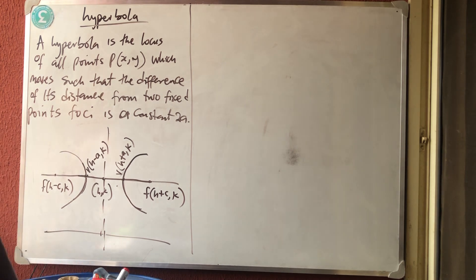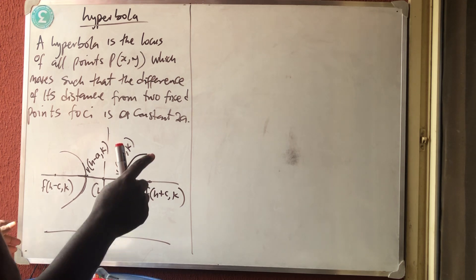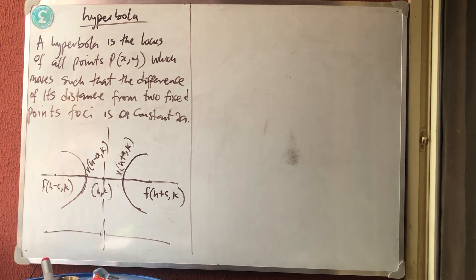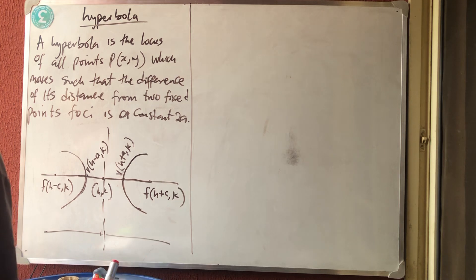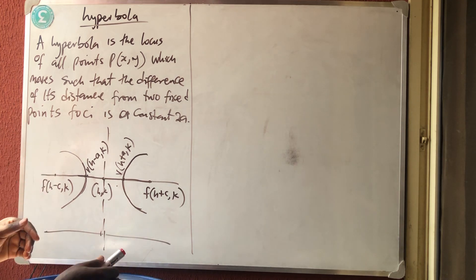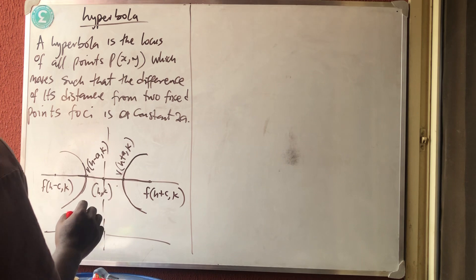Now if you remember in ellipse — that's why ellipse and hyperbola have the same formula — in ellipse, when you add the distances between the fixed points you get a constant 2A. But in hyperbola it's not the summation, but the difference.